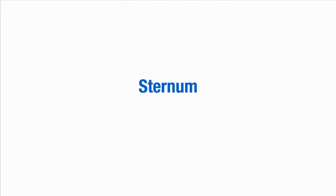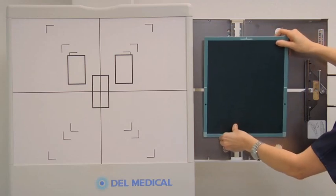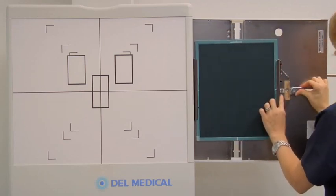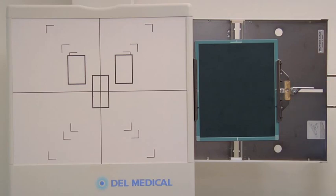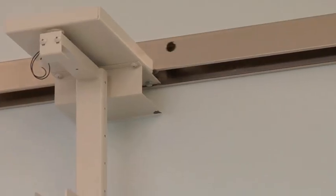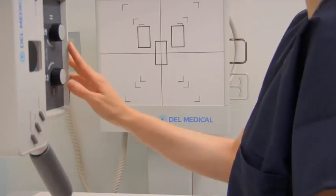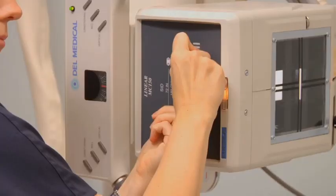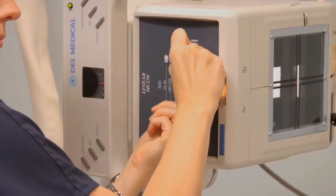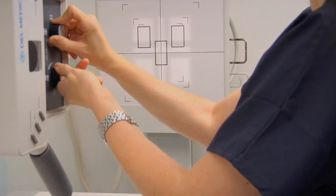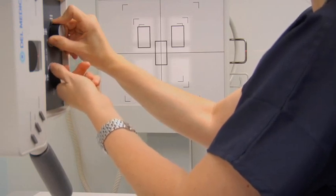To obtain a radiographic projection of the sternum in a PA oblique or right anterior oblique position, select a 10 by 12 inch cassette and orientate it lengthwise in the upright. Set the SID to 40 inches. Turn on the collimation light and align the central ray to the center of the image receptor. Collimate to the cassette size.